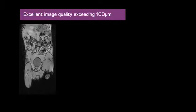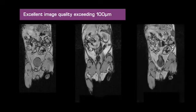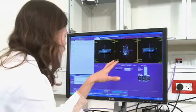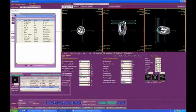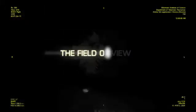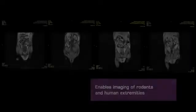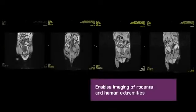The system features high spatial resolution and excellent image quality exceeding 100 microns. An up to four-channel receiver enables high signal-to-noise ratio and support for array-coil imaging. The field of view enables imaging of small animals such as mice and rats, as well as human extremities.